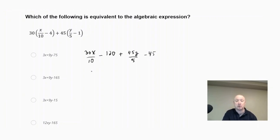Simplifying this, 30x over 10 would be 3x minus 120. 45y over 5 would be 9y, and then we'd have our minus 45. And now we have some like terms here. The 3x and the 9y are not like terms, but the constants can be combined. So we have negative 120 and negative 45, which would be negative 165. So we would get 3x plus 9y minus 165, which is our second choice.